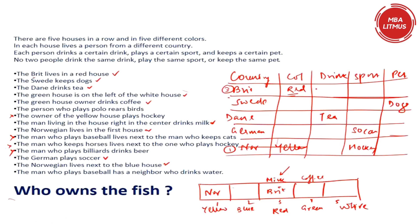The man living in the center drinks milk, so the British person drinks milk. The green house owner drinks coffee — the green house owner must be either the Swede or the German. We have two combinations: polo and birds, and billiards and beer. The sports column is mostly occupied, so billiards fits in the remaining slot and that person also drinks beer.